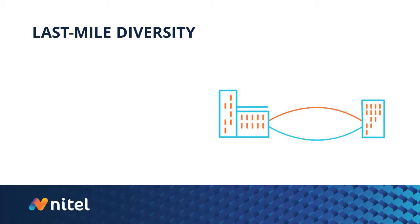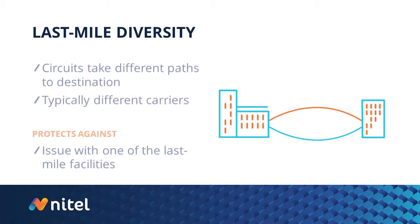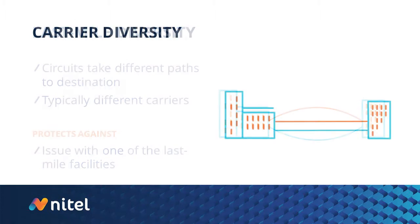First, we have last mile diversity, which ensures the local loops of two circuits delivered to a common location are being routed over two distinct sets of network facilities. This prevents against downtime due to an outage of the network of one of the carriers.